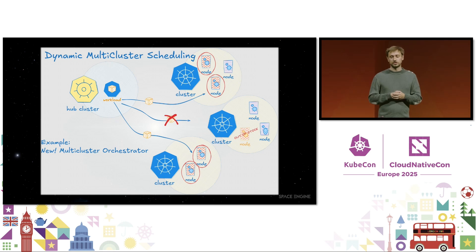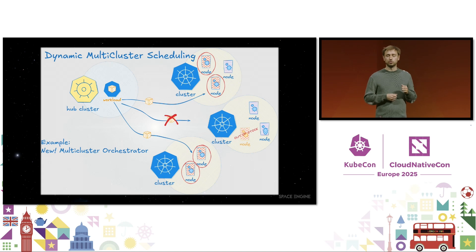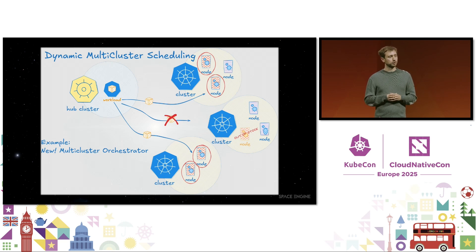We're also very excited to announce that Google is open sourcing a solution called Multi-cluster Orchestrator to achieve dynamic placement, especially of unique workloads like AI model servers. We just released a blog post talking more about it with a lot more info.